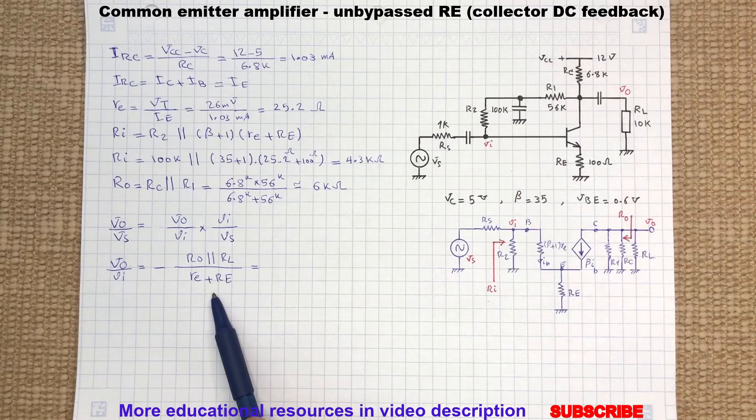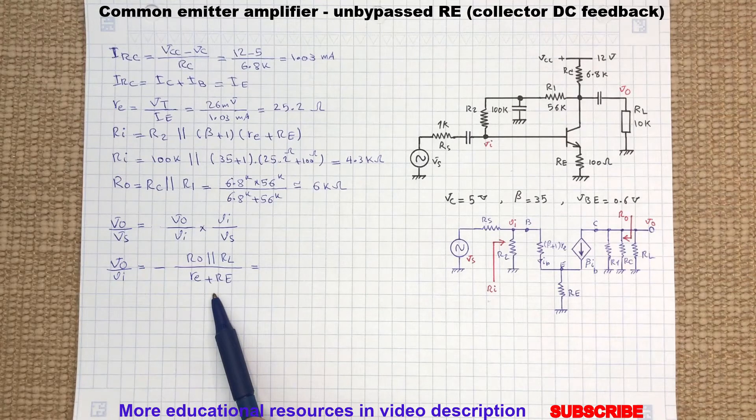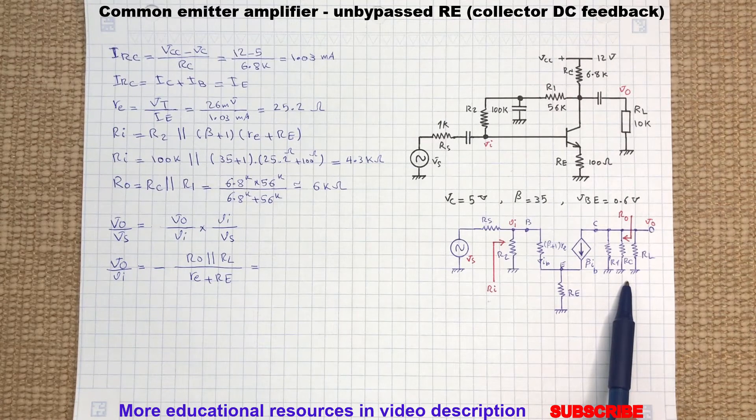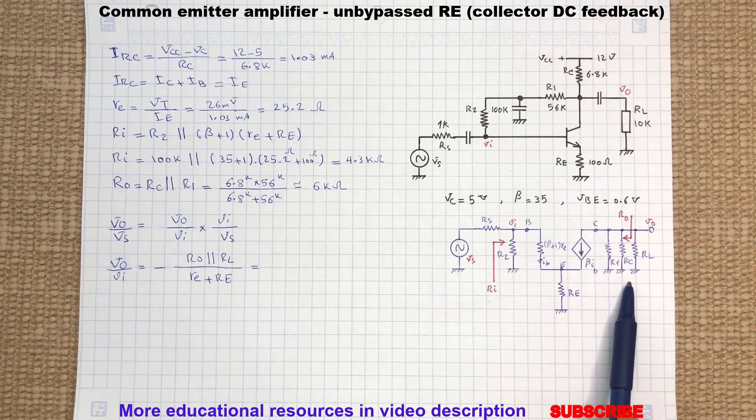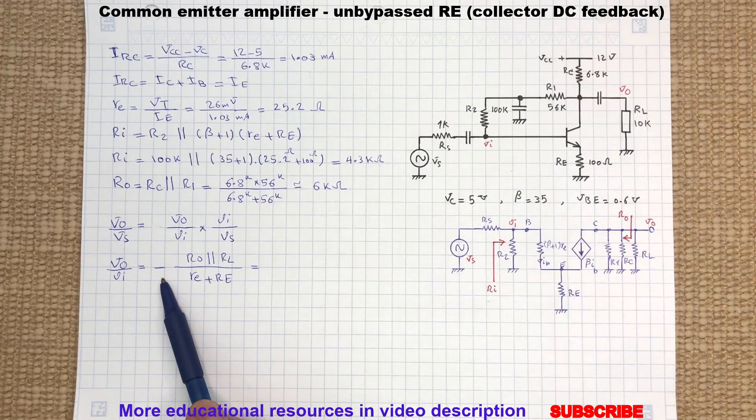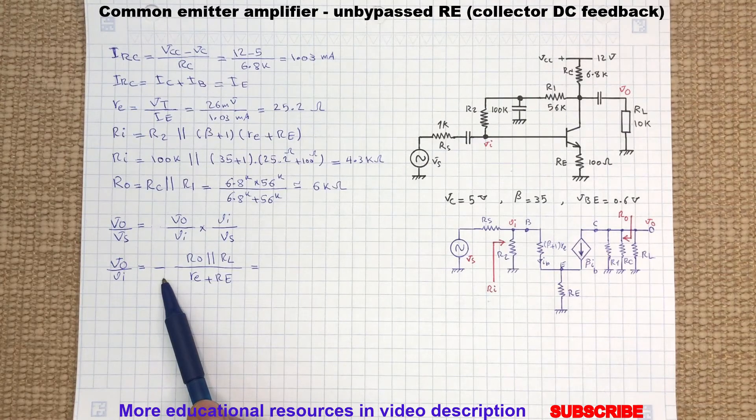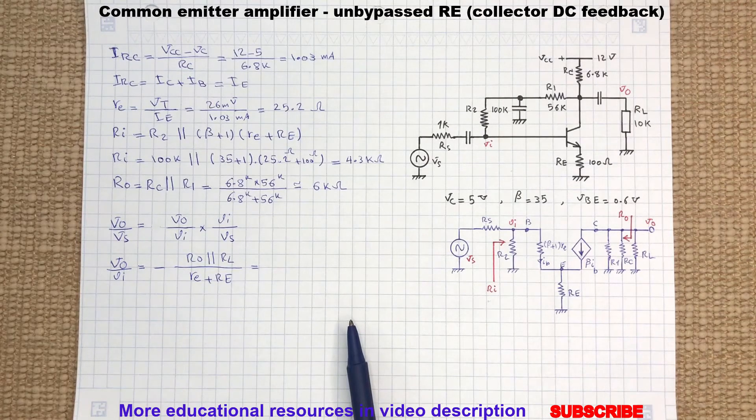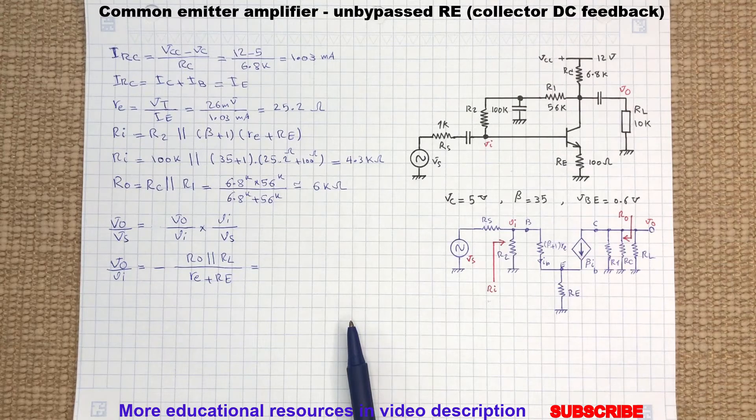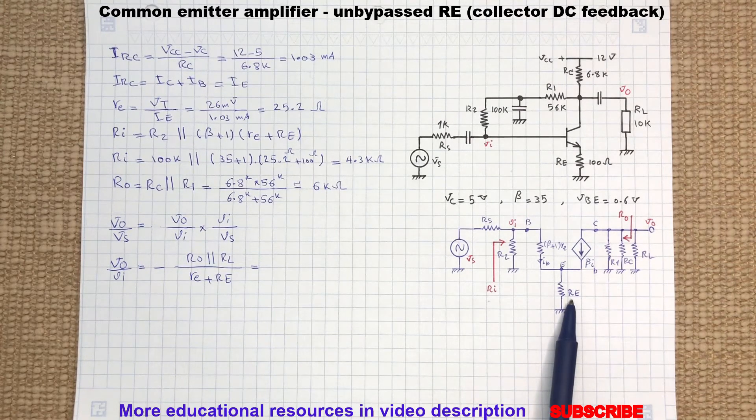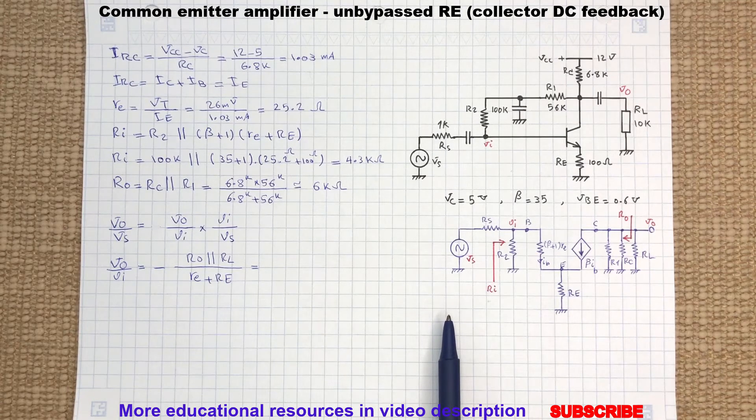This expression means all the resistance seen from the collector terminal divided by all resistance seen from the emitter terminal, and the minus is representing the 180 degree phase shift between output and input. Please note when we look from the emitter terminal we see the emitter dynamic resistance and RE in series. So let's calculate VO to VI.